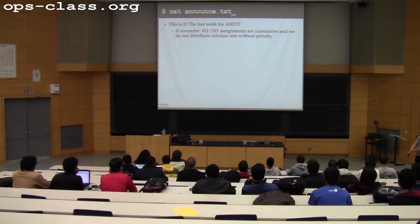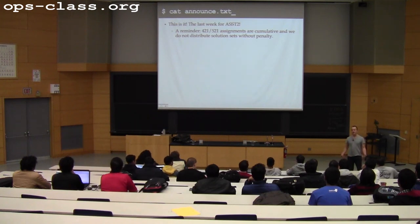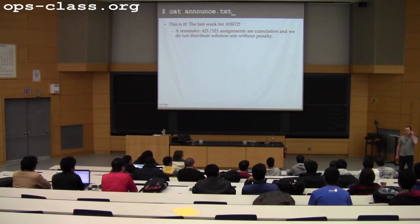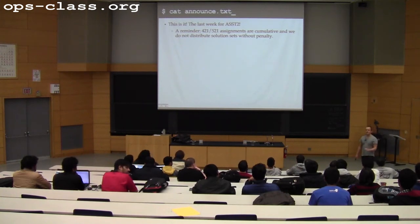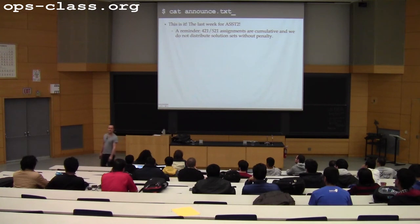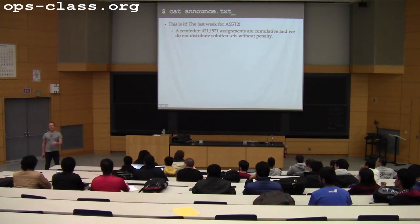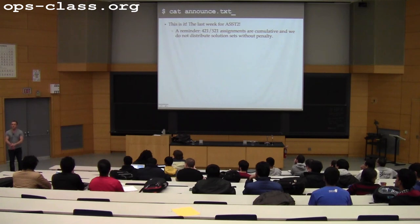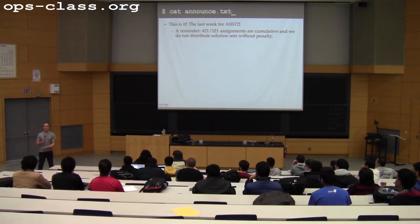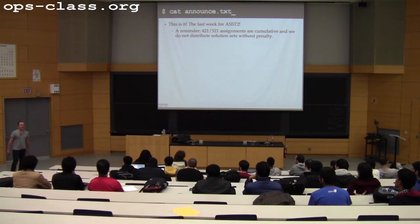A couple of announcements. For assignment two, Friday is the deadline — good luck. The assignments in this class are cumulative, so when you're done with assignment two you may have to keep working on it, because all of assignment three depends on the assignment two things you're doing. You can either fight those bugs now and get credit, or fight them later. We'll probably distribute a solution set but charge a pretty hefty fee for it, so my suggestion is let's crank out this week and get assignment two as far as you can.